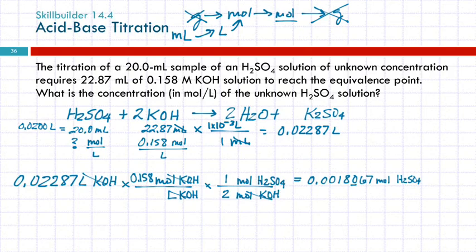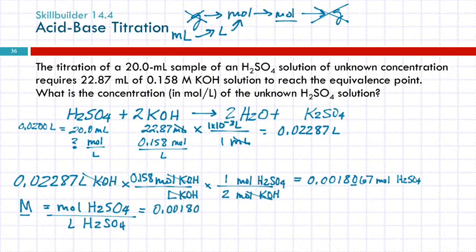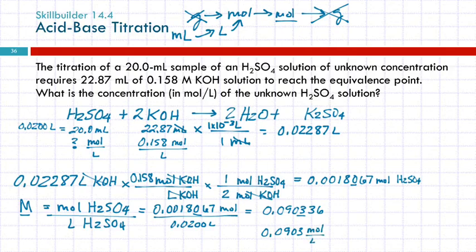So, the molarity, the concentration, is moles of H2SO4 divided by liters of H2SO4. The moles, 0.0018067 moles divided by the 20 milliliters expressed in liters. And, this ends up being 0.090336. And then I round that 0.0903 moles per liter. Or, this is the one place if you want to use the capital M. Use the capital M in your final answer. But, don't use it anywhere in here because it's a lot more confusing.